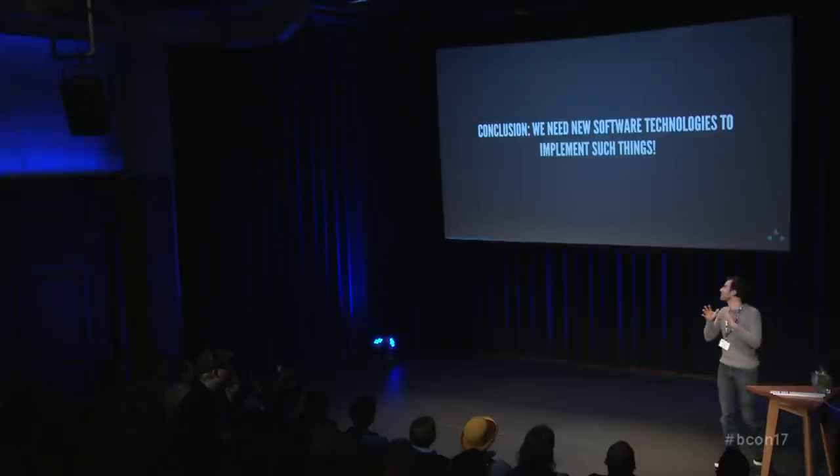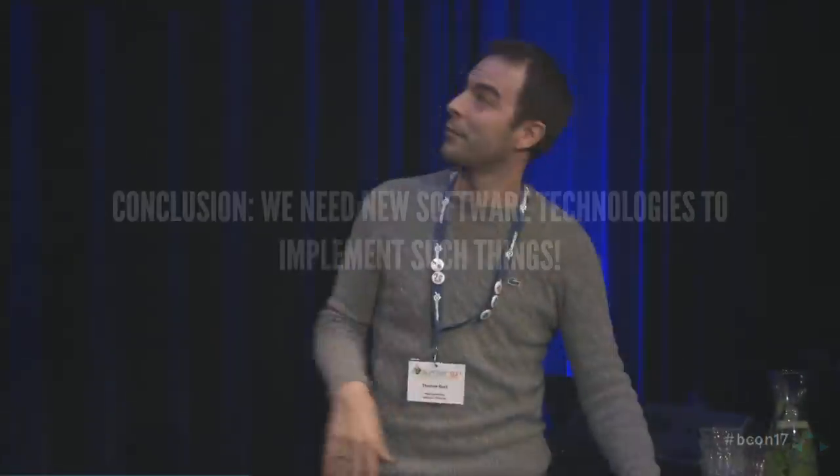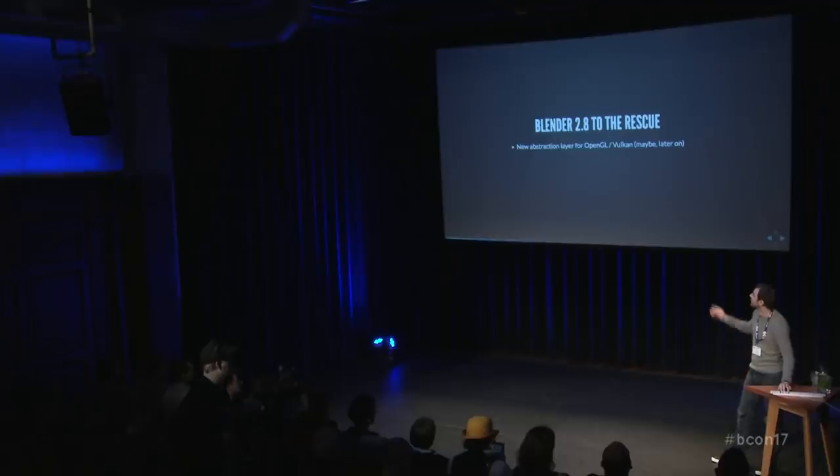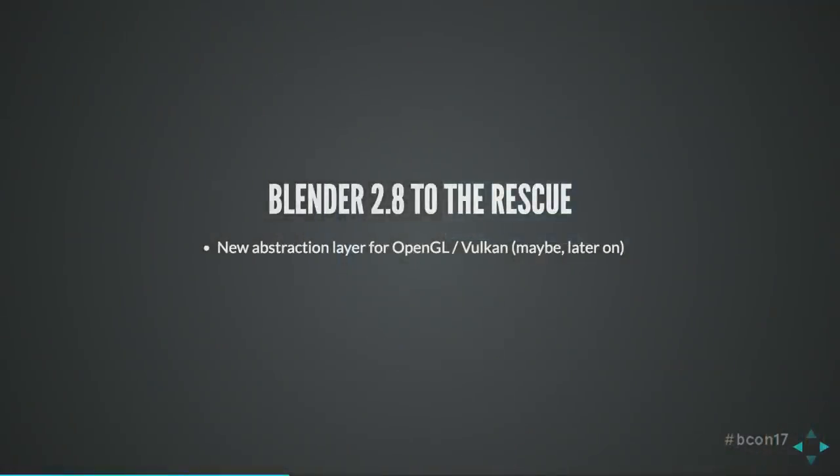Clément was hiding two years in a cave and programmed so much. He came up with Eevee, and we need new software technologies to implement such things. Because his Eevee development was forking Blender and he was changing all kinds of stuff, we then had to decide how we implement that all into our trunk — into our master Blender. Blender 2.8 is a perfect catch for that. With Blender 2.8 we said we can't rely on all this old technology, we have to remove things and add new stuff. So there is a new abstraction layer coming for Blender 2.8, maybe for Vulkan, but that is on the future horizon.